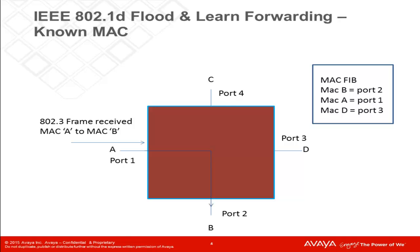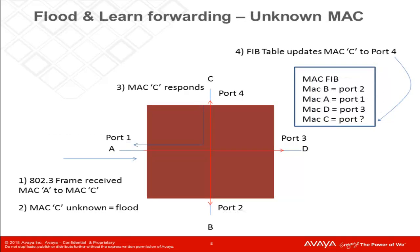As we can see, the process of known MAC forwarding is very straightforward. The bridge or switch will reference its forwarding table and act accordingly. The method for unknown MAC forwarding is also fairly straightforward. The bridge or switch simply floods the frame out all ports and waits for a response. If the MAC is on the network, it will send a responding frame. The bridge or switch then updates its table and will use the known MAC method for forwarding data to that MAC address as long as it remains valid.